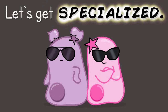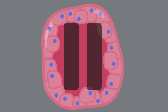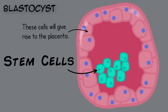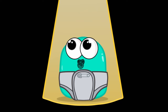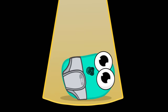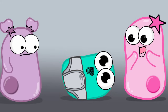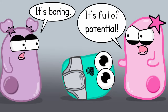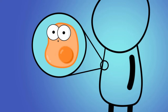Let's pause here at the blastocyst. Notice it has stem cells, and these stem cells are amazing. They're not differentiated yet — they're not specialized. They're like blank slates. They don't have a special structure. They don't have a special job. They can become any type of body cell.